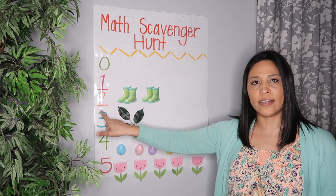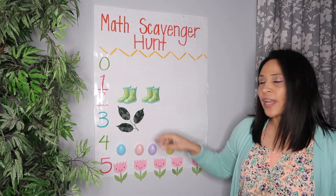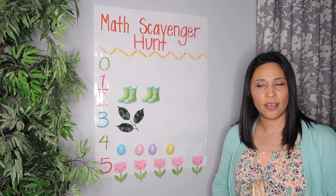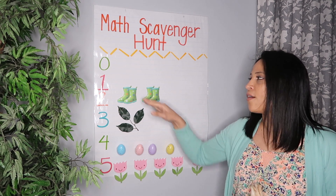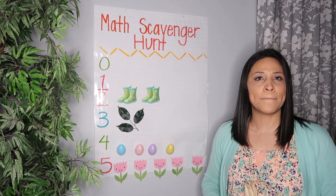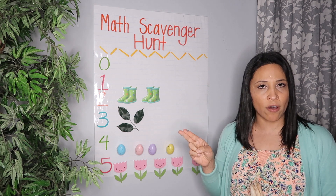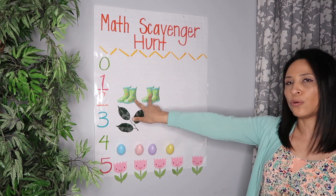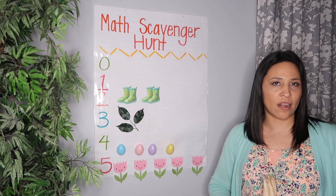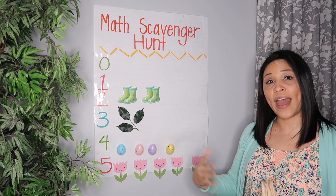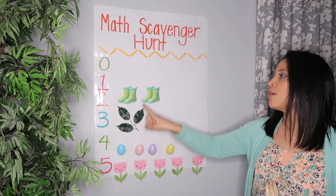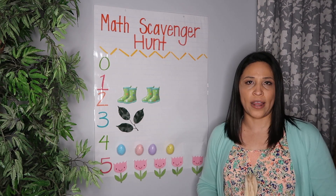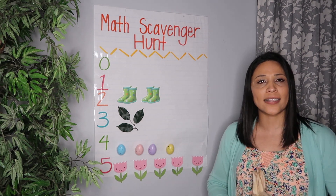We are reviewing our numbers, so make sure that you are able to identify the number and count groups of one through five — both by counting and without counting. For example, you'll say 'two pairs of rain boots' without counting, and then 'one, two — two pairs of rain boots' with counting. Practice at home!